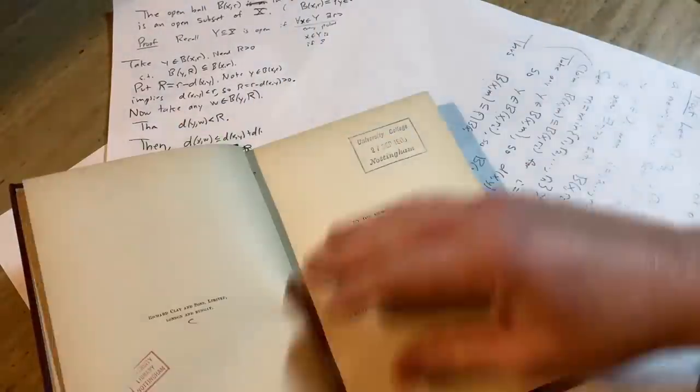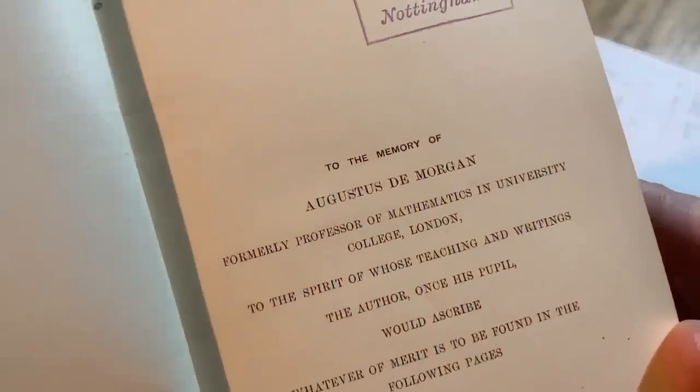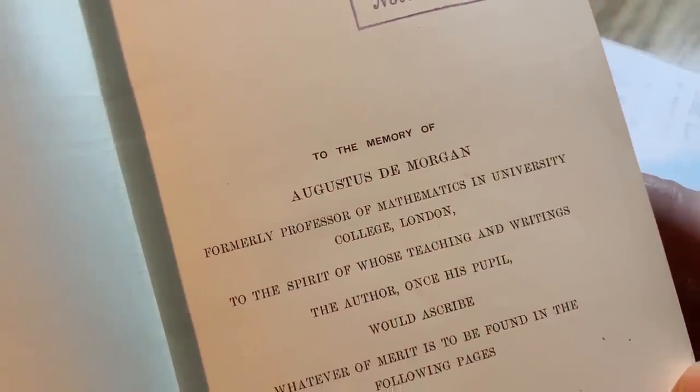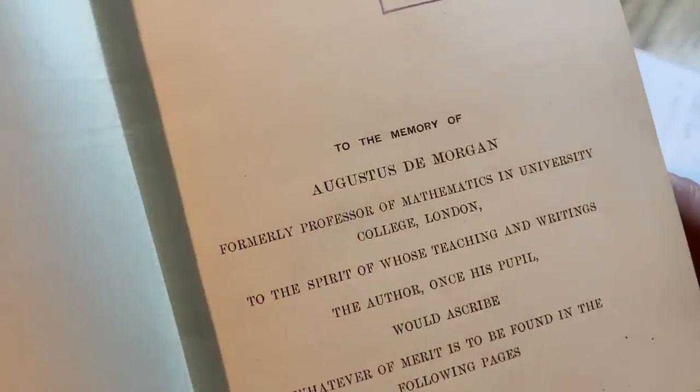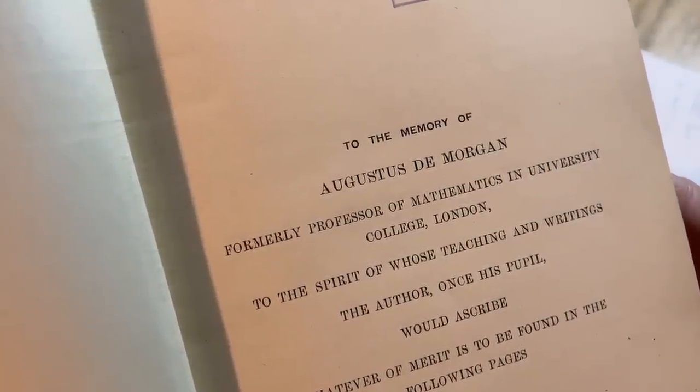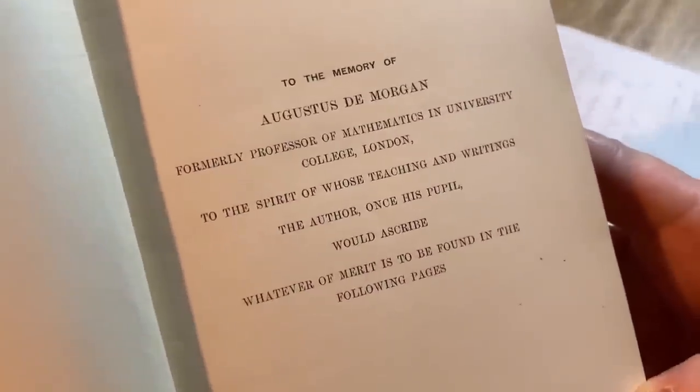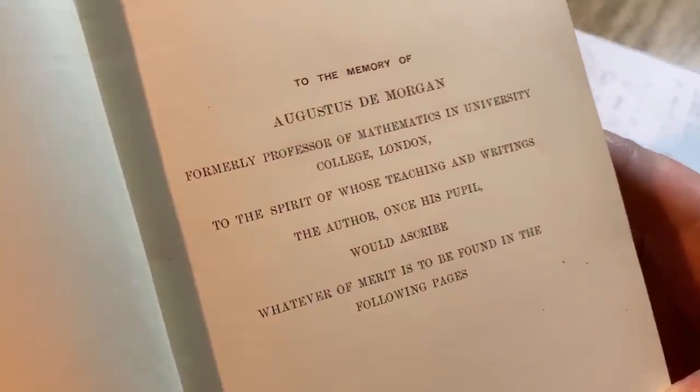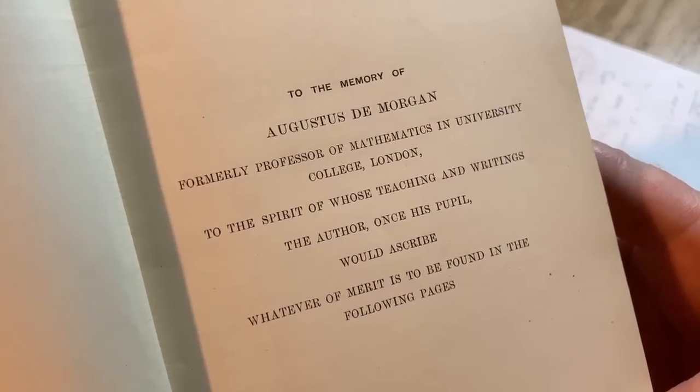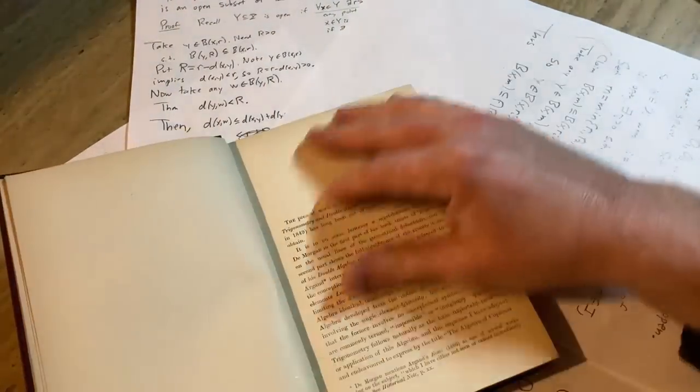This is really cool. What's this? To the memory of Augustus De Morgan - wow that's the same Augustus from De Morgan's laws that you learn - formerly Professor of Mathematics in University College London, to the spirit of whose teaching and writings the author, once his pupil, would ascribe whatever of merit is to be found in the following pages. Wow, I'm getting goosebumps. So this is a student of Augustus De Morgan who wrote this book.